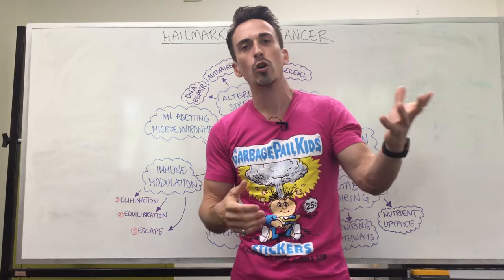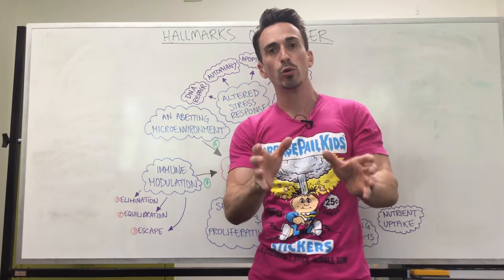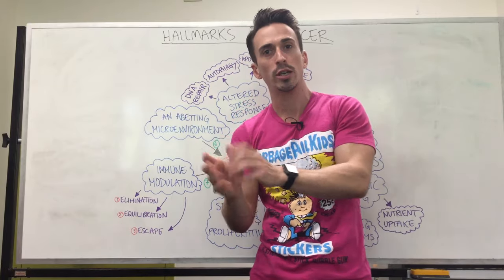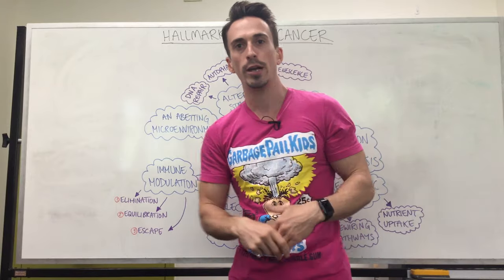Some of these oncogenes include the RAS family, and one really important tumor suppressor gene is p53.